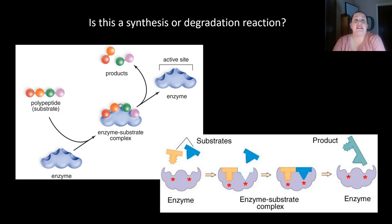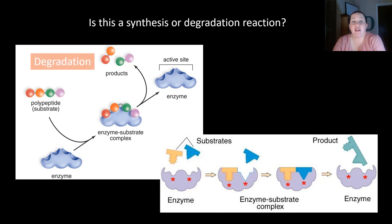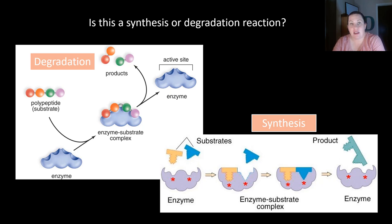Quick quiz — is this a synthesis or degradation reaction? In the first example, an enzyme takes in a polypeptide substrate; when it enters the active site, the enzyme changes shape, and the product comes out where a four-unit protein molecule became three two-unit molecules — this is degradation, it broke apart. In the second example, two objects went into the enzyme but only one came out — this is synthesis. If it breaks apart, it's degradation; if it builds something new, it's synthesis.